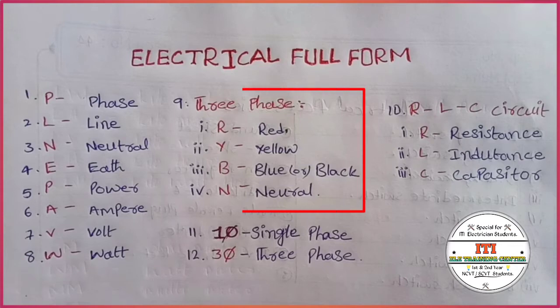3 phase: R: red, Y: yellow, B: blue or black, N: neutral.